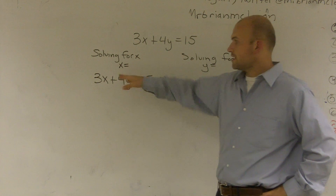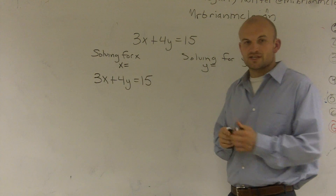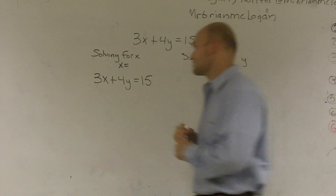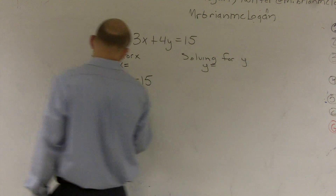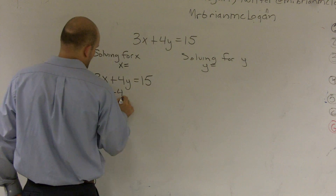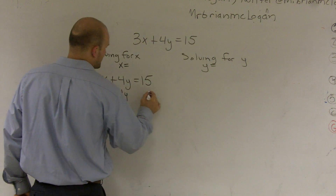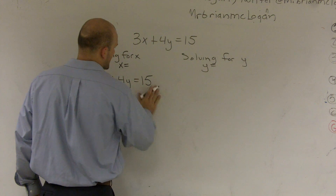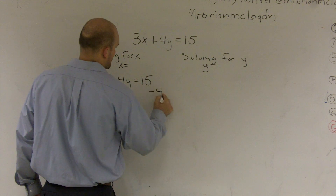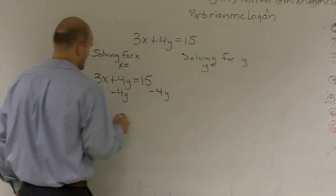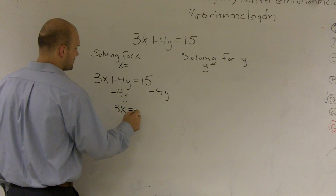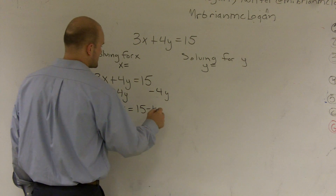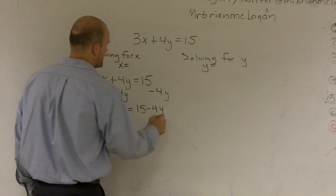When we're solving for a variable, you always want to undo your addition and subtraction first. So here, I'm going to undo the addition of 4y. The undo of addition is subtraction, so I subtract 4y on both sides of my equation. Therefore, I get 3x equals 15 minus 4y.